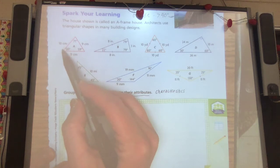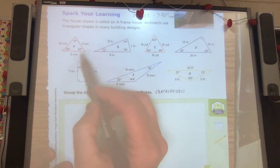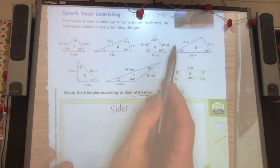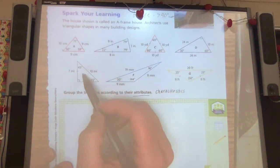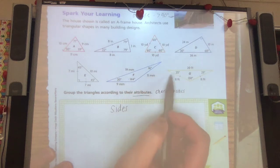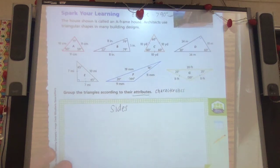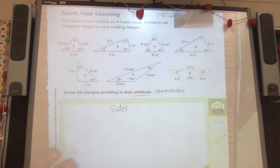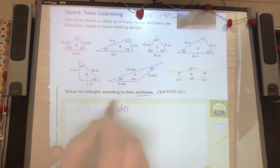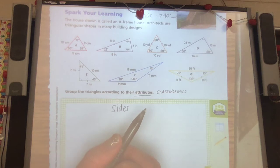All right. So this triangle A, the sides are 10, 9, 11. Triangle B: 8, 8, 3. Triangle C: 10, 10, 10. Triangle D: 24, 10, 26. Triangle E: 7, 7, 10. Triangle F: 19, 9, 11. Triangle G: 20, 11, 11. You may notice something. Some triangles have all the same length. Some triangles have all three different lengths. And some of them have two that are the same. And that's one of the ways that we're going to characterize these triangles.